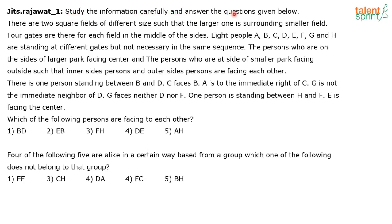Study the following information carefully and answer the questions given below. There are two square fields of different size such that the larger one is surrounding the smaller field. Four gates are there for each field in the middle of the sides. Eight people A, B, C, D, E, F, G and H are standing at different gates but not necessarily in the same sequence. The persons on the sides of the larger park are facing the center, and the persons on the sides of the smaller park are facing outside, such that inner side persons and outer side persons are facing each other.